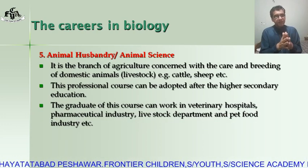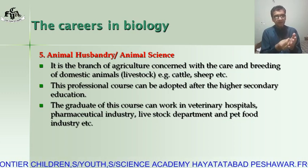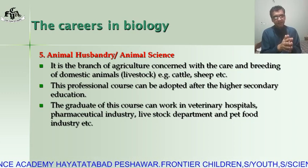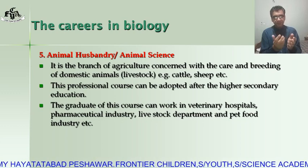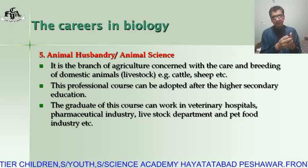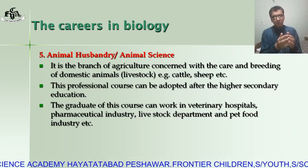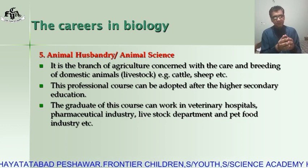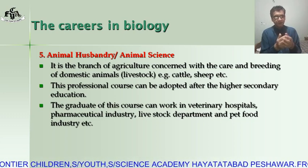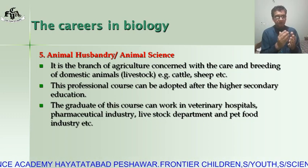The next field is animal husbandry, or animal sciences. It is also a branch of agriculture concerned with the care and breeding of domestic animals like cattle, sheep, etc. This profession course can be adopted after higher secondary education. Graduates of this course can work in veterinary hospitals, pharmaceutical industry, livestock department, and food industry. The degree awarded is DVM — Doctor of Veterinary Medicine.